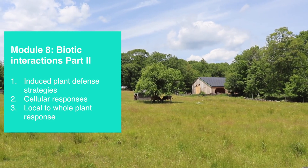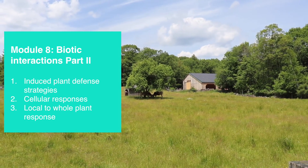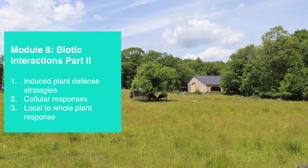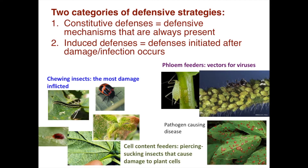Hi everyone. In today's module we'll talk about biotic interactions part two, where we discuss induced plant defenses and everything from cellular to leaf level to whole plant response. In video module seven we started talking about biotic interactions for plants, focusing on harmful interactions with herbivores and pathogens, and the constitutive defenses — the defensive mechanisms that are always present. Today we'll expand on this topic to include the induced defenses — defenses initiated only after an infection has already started or when herbivory is present.